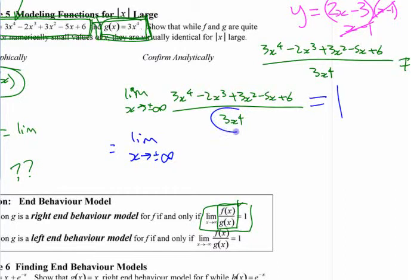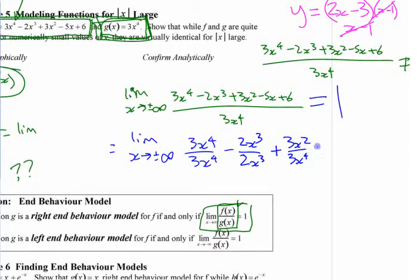If you have a single term on the bottom, you can split it apart, right? 3x to the 4th over 3x to the 4th. That one's easy to see what it is. All the rest of them here. I'm writing this out, but probably you can jump ahead here a little bit and see what each of these terms is going to be.